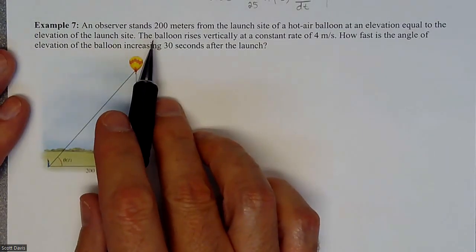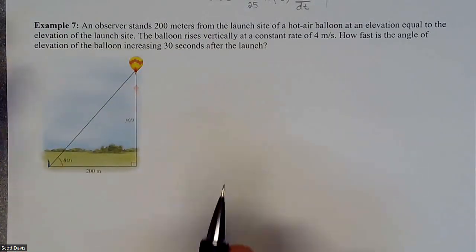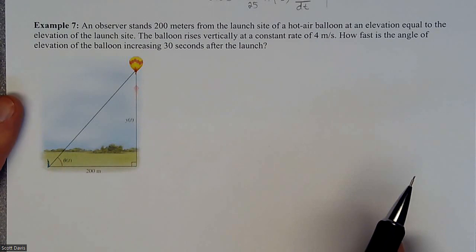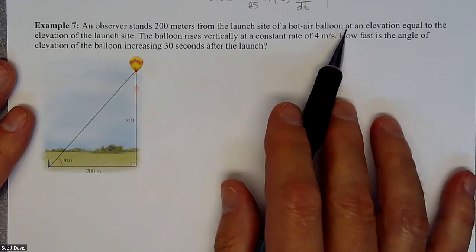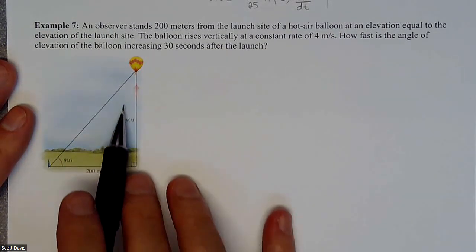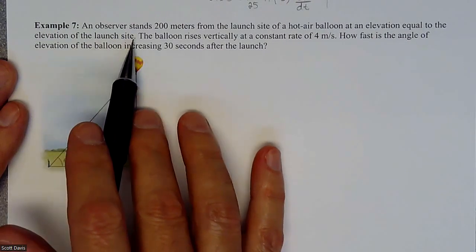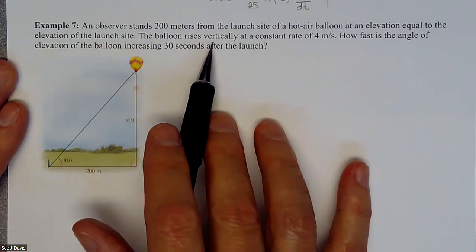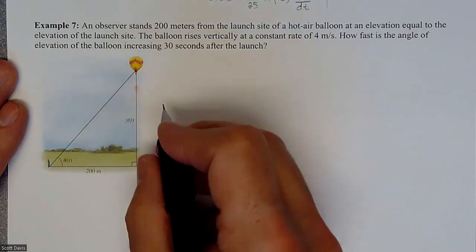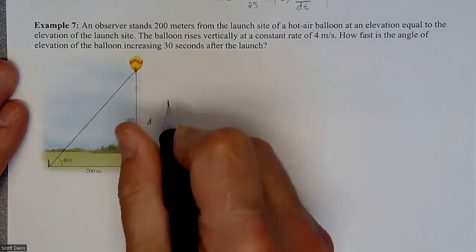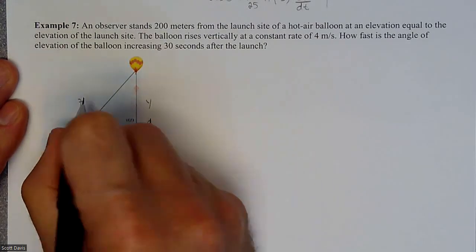In this example, we are going to do a related rates problem involving a triangle. An observer stands 200 meters from the launch site of a hot air balloon at an elevation equal to the elevation of the launch site. The balloon rises vertically at a constant rate. We label the horizontal distance as x, the vertical height as y, and the hypotenuse as z.